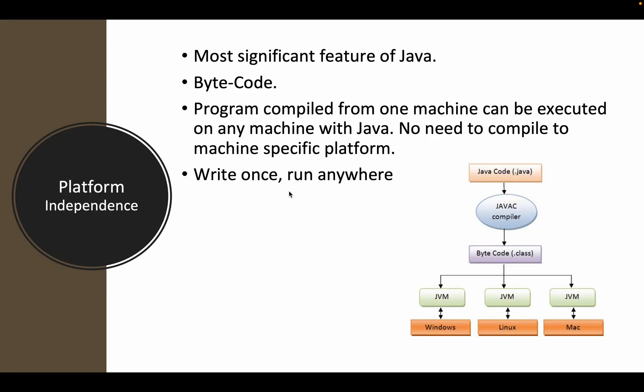Platform independence is the most important feature of the Java language. The difference between the way Java and other programming languages work was very revolutionary. Coding in other languages is first translated by a compiler into instructions for a specific type of computer. The Java compiler instead turns code into something called bytecode, which is then interpreted by the Java Runtime Environment or a virtual machine.